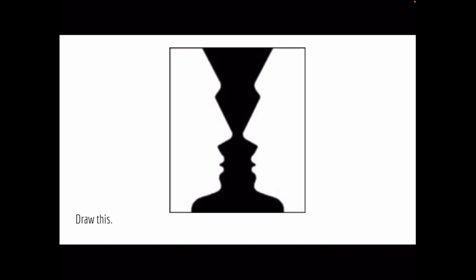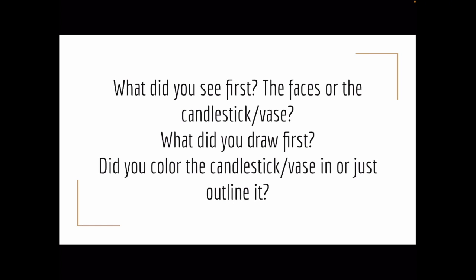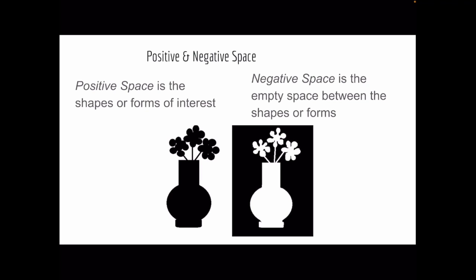If you want to see it again, there it is. You see now maybe perhaps you haven't seen that yet, the faces as well as the base. So positive space is the shapes or forms of interest, whereas negative space is referring to the empty space that's between the shapes or forms.